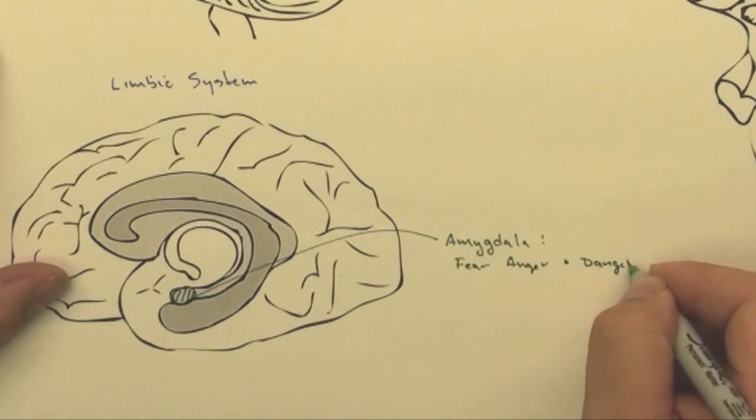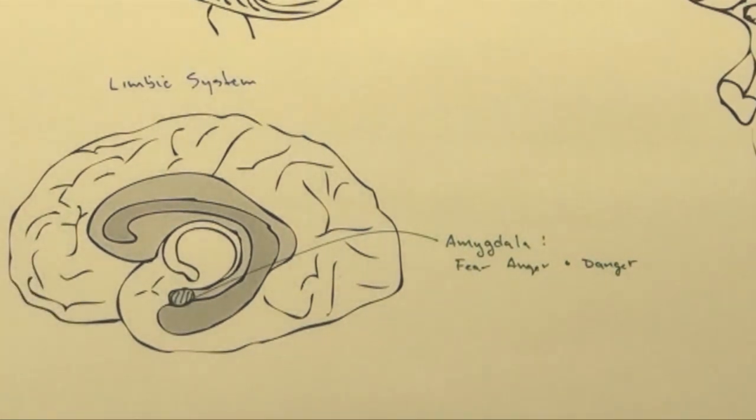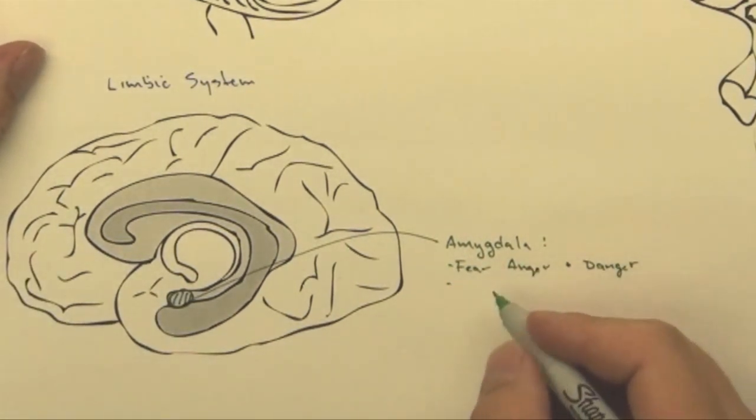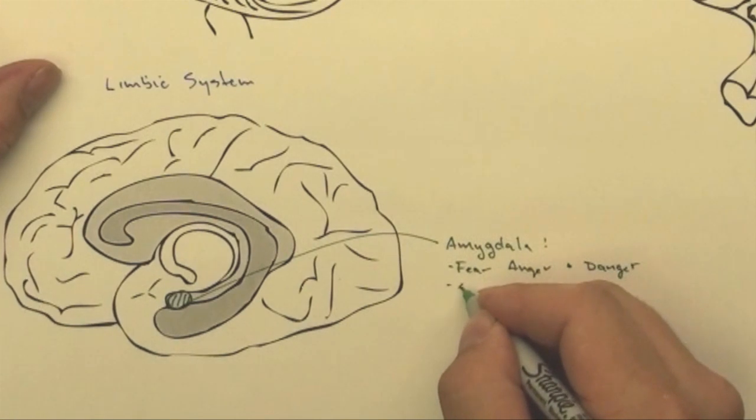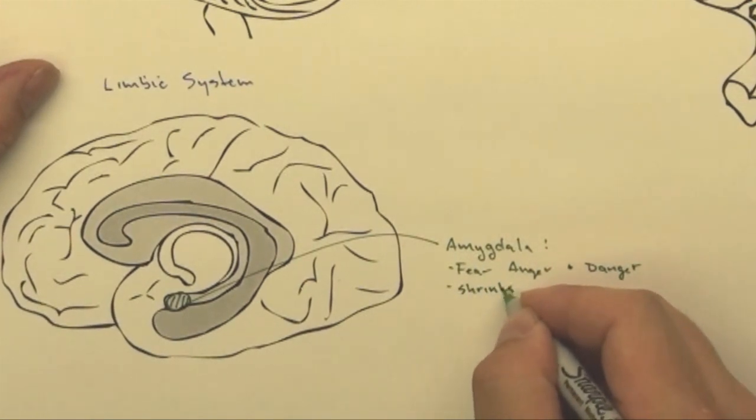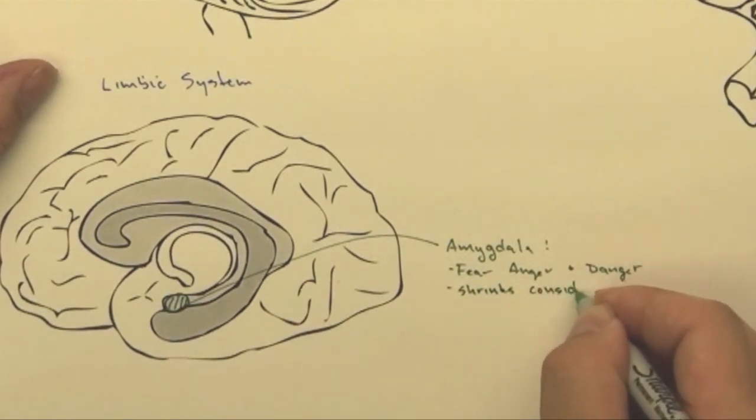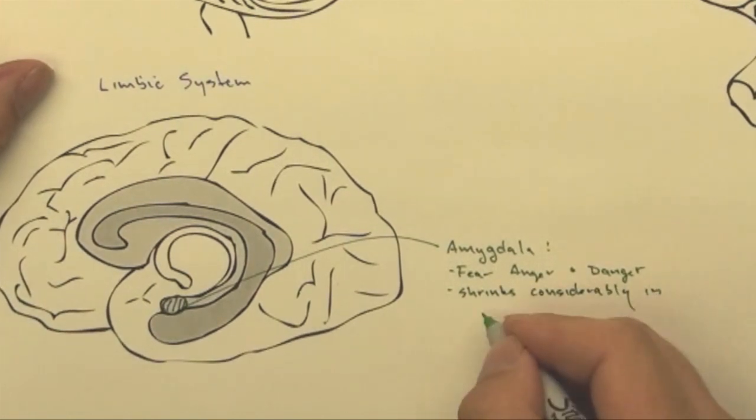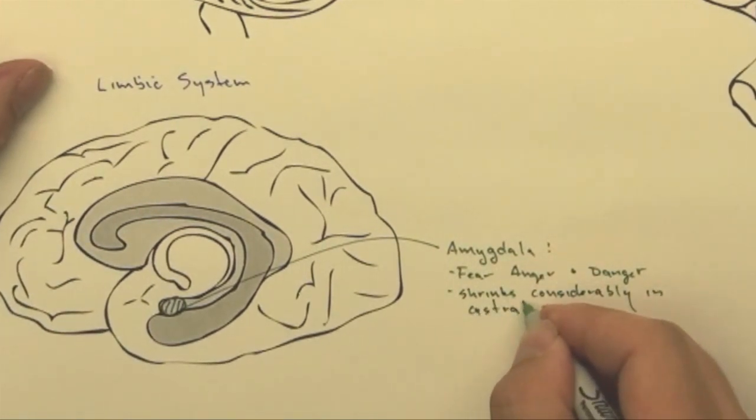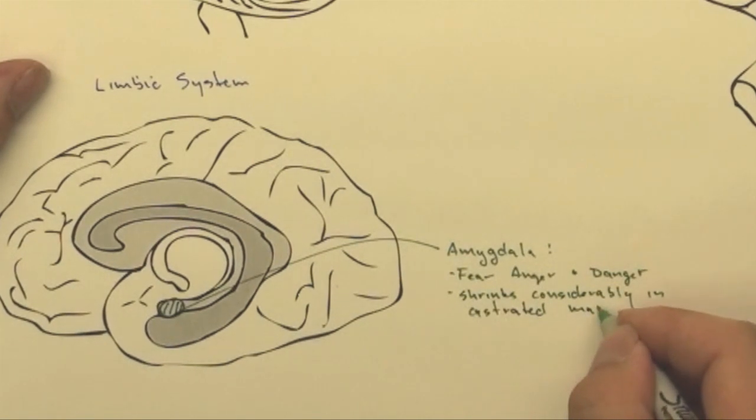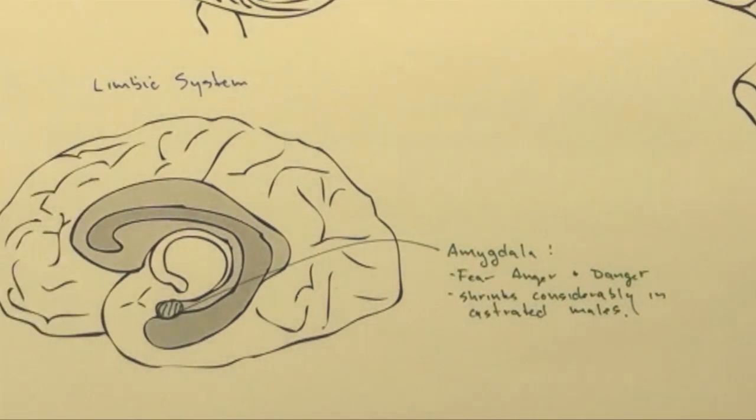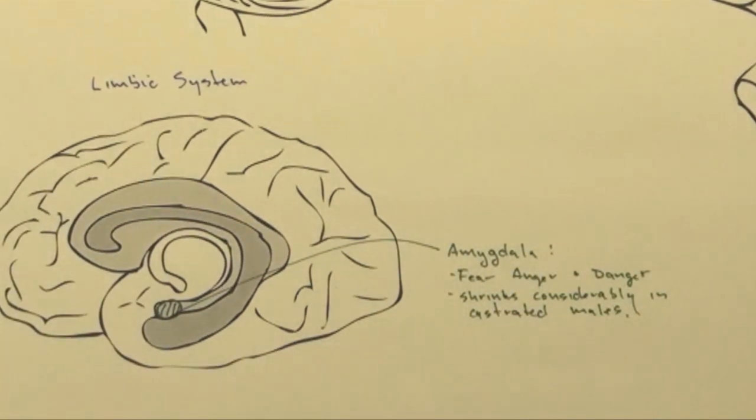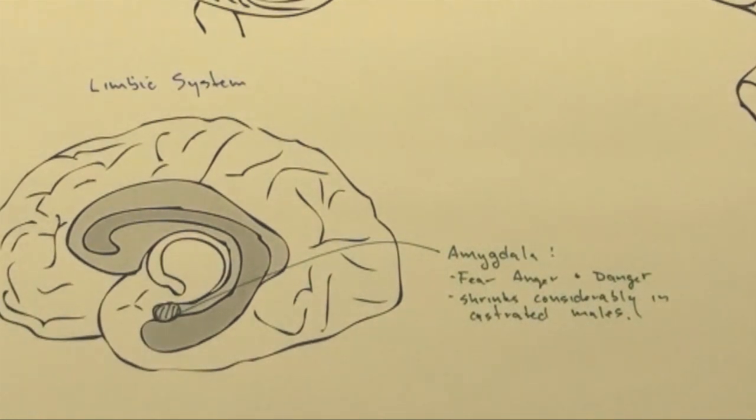So it basically makes an emotional assessment based on fear. Probably one of the best ways to show that it's fear is it shrinks considerably in castrated males. So it's kind of the part of the brain that makes males have male behaviors of aggression, fear, and anger.